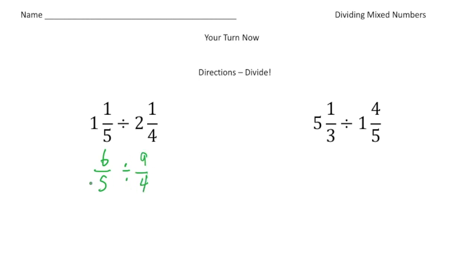And now we can keep changing flip it. So it's going to be six-fifths times four-ninths. And now when we multiply fractions, we can cross-reduce if we can. And we can because three goes both into nine and six. So three goes into six twice. And three goes into nine three times.